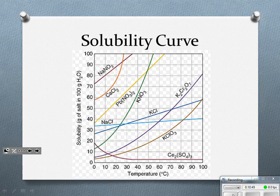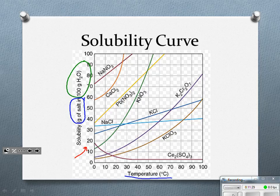What I have right here is what we call a solubility curve. One of the most important things you need to know is that when dealing with solubility, we need to know three things: the temperature, which I have on this axis; the amount of the solute, which is the grams of salt shown here; and the amount of the solvent. All these different salts are dissolved in 100 grams of water, and we can see different temperatures on the bottom axis.